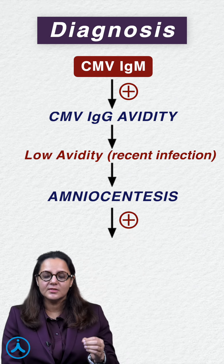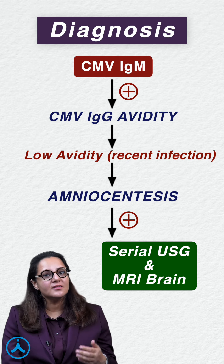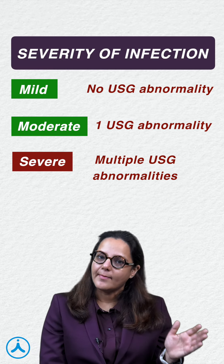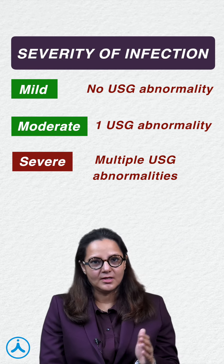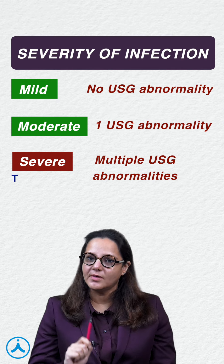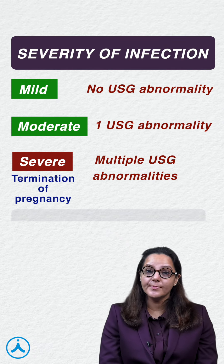If amniocentesis is positive, we will follow up the fetus with serial ultrasound and MRI. Depending on the number of abnormalities seen on the ultrasound, disease is divided into mild, moderate, and severe. Remember, it is only in severe disease where we ask the patient for termination of pregnancy, not in the mild and moderate cases.